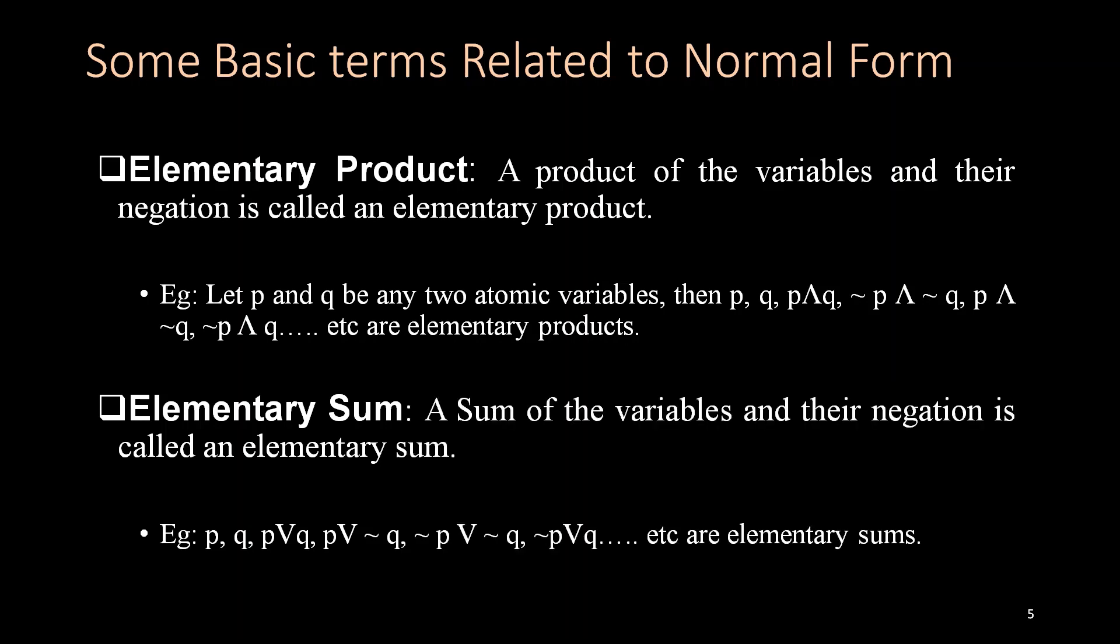Now, Elementary Sum: the sum of the variables and their negation is called elementary sum. Product or sum, there is nothing different. Same is the same. Just product means conjunctive, sum means disjunctive. Sum means OR, product means AND. Example you can see here.